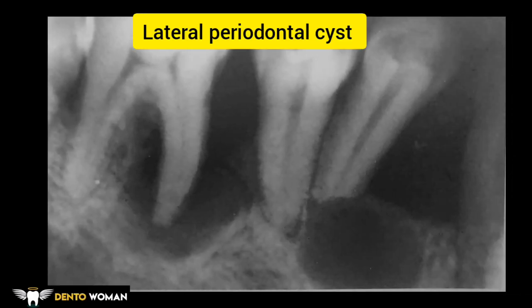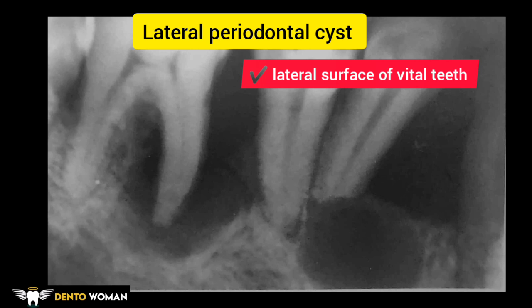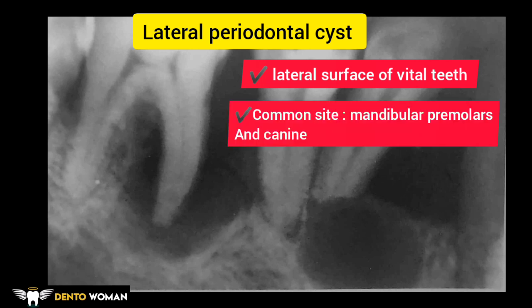This is the radiographic appearance of the lateral periodontal cyst. It is usually found on the lateral surfaces of vital teeth — note the term vital teeth — and most often in the mandibular canine and premolar region. Radiographic features include a round to ovoid radiolucency with hyperostotic margins showing excessive bone deposition around the margins. It is located between the cervical margin and apex of the root surface and is always less than one centimeter in diameter in most cases.